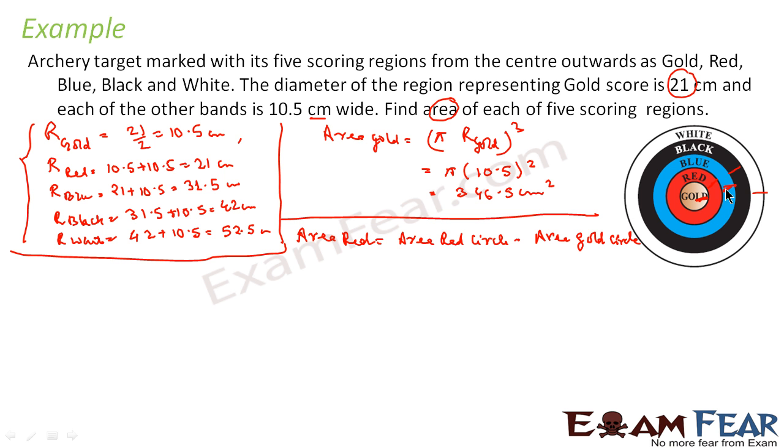See, area of this red is nothing but, you take the whole area, this big area, this area, and from this you subtract the area of gold circle. So you will get this path, the red path, the red band actually. Correct?